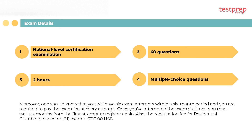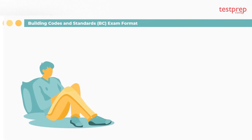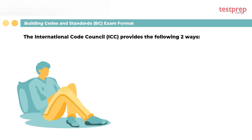You will have six exam attempts within a six-month period, and you are required to pay the exam fee at every attempt. Once you have attempted the exam six times, you must wait six months from the first attempt to register again. The registration fee for the exam is $219 USD.